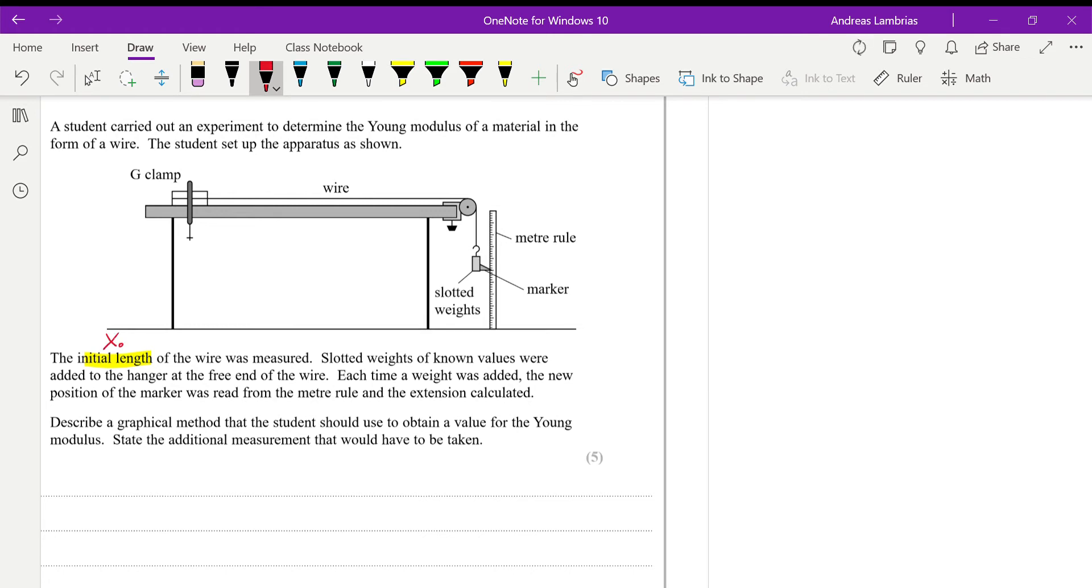Then, the slotted weights are known. So, the weights that we add are known. The weight is a type of force, so therefore, we have the force that we apply on this wire. Then, every time a new weight is added, the marker over here moves, and then we can measure the new length. And therefore, we can calculate the extension. Therefore, the extension is known as well.